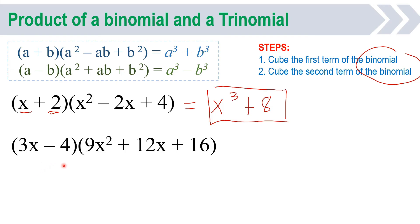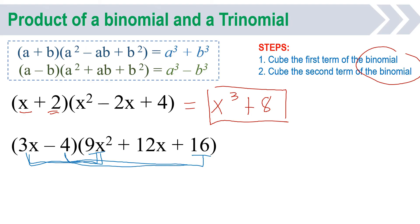3x minus 4, times 9x squared plus 12x plus 16. Look at the pattern. The first and last term must come from the square of the first and last term of your binomial: 3x times 3x is 9x squared, and 4 times 4 is 16. Then the middle term is the combination of the two: 3x times 4 is 12x.